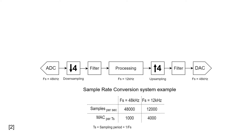For example, if we have to record 1 second of the input signal at the original sampling rate, we have to record 48,000 samples. Whereas with the sampling rate conversion, we have to store only 12,000 samples. Another benefit is the available computational power. If the device can perform 1000 multiply-accumulate operations per sample at 48 kHz, at 12 kHz it would be able to perform 4000 multiply-accumulate operations per sample, which is a significant computational gain.